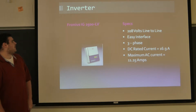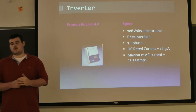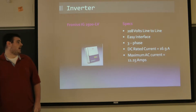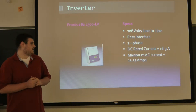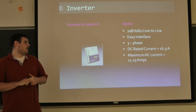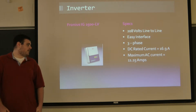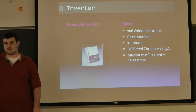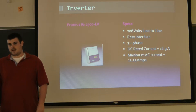The specific inverter we are going to use is called a Strawn ESIG 2500LV. For our design, we needed 208 volts line-to-line and three phase. This specific one has a DC rated current of 16.9 amps. Our design is going to be a little more than that. It also has a very easy interface to transfer data into the computer.